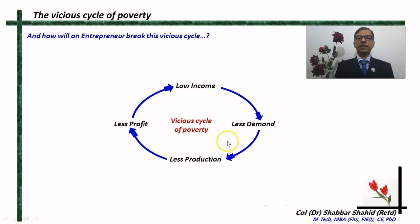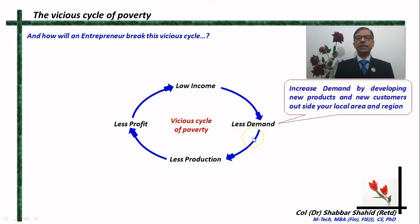Now the question is: how will an entrepreneur break this vicious cycle? What does he have to do? One thing he can do is increase demand. How can he increase demand? By developing new products and new customers outside the local area, outside their local region. If they continue with what they are doing, the demand will not increase. They have to develop some new product in a new manner, in a new market, and then the demand will increase.